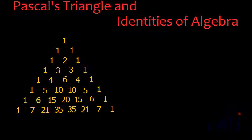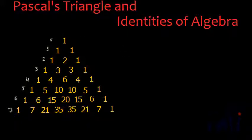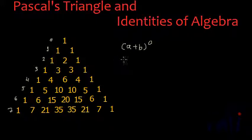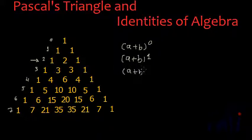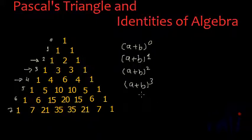Before coming to that point, let me mark the row numbers of Pascal's Triangle. This is row number 0, this is row number 1, this is row number 2, this is row number 3. Row number 0 will lead you to the formula of (A+B)⁰, row number 1 to (A+B)¹, row number 2 to (A+B)², and row number 3 to (A+B)³. Similarly, row number 4 will help you memorize the formula of (A+B)⁴. Using Pascal's Triangle, you can write any of these identities just like that.